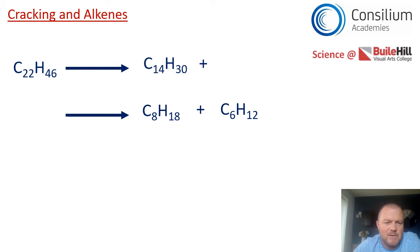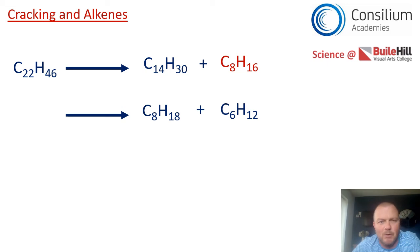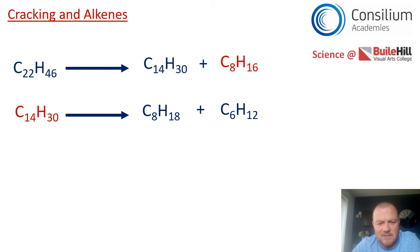C22H46 cracks to give C14H30, leaving C8H16 — which is definitely an alkene because 2 × 8 = 16, fitting CnH2n. For the second equation, working out the starting alkane: 8 + 6 = 14 carbons and 18 + 12 = 30 hydrogens, giving C14H30 as the alkane we would start with.